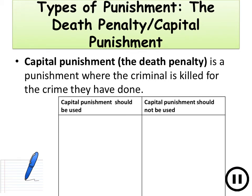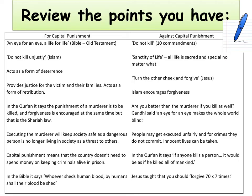The final type of punishment we need to look at is the death penalty, or capital punishment — killing a criminal for the crime that they have committed. On your piece of paper, make a table with reasons why capital punishment should be allowed on one side and reasons why it should not be used on the other. In favour of capital punishment, in the Bible it says an eye for an eye, a life for a life — this is in the Old Testament and basically means that if you've killed someone you deserve to have your life taken as well.